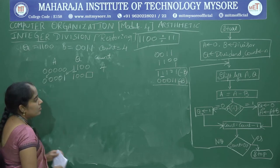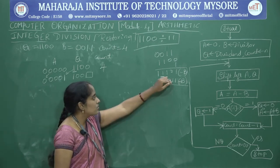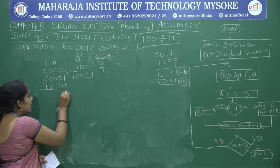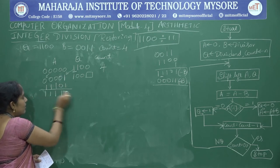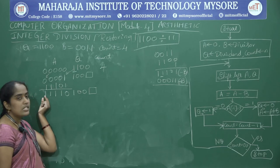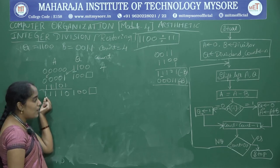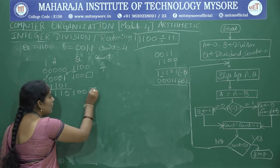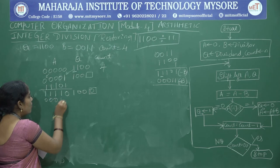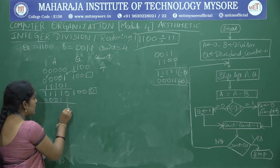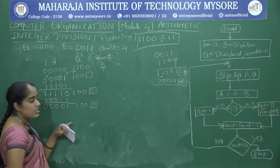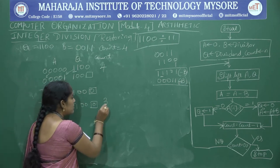A equals A minus B: add 11101 to 00001, giving 11110. Sign bit of A is 1, so set Q0 to 0 and restore A: A equals A plus B. Plus B is 00011. Result is 10000 with Q 1000. Decrement count to 3.